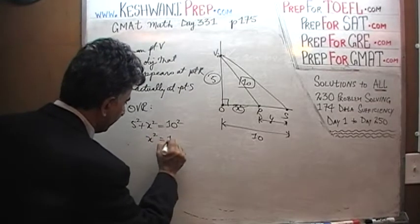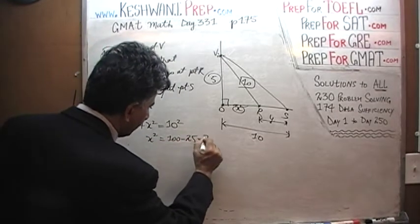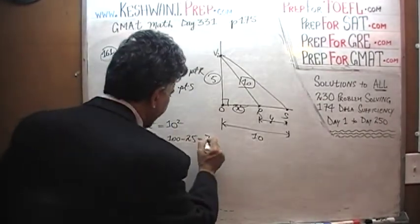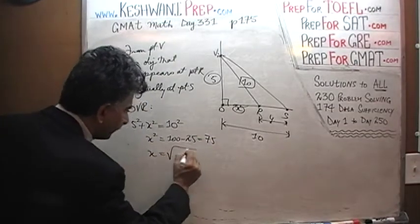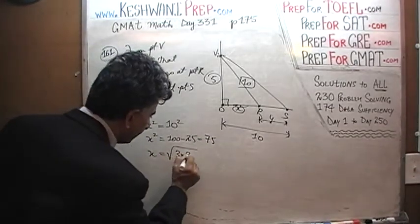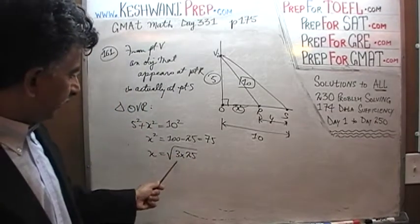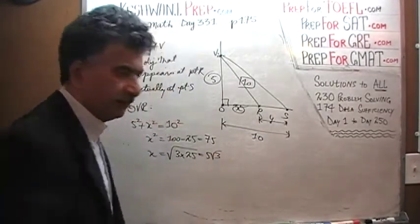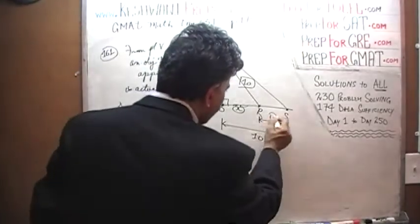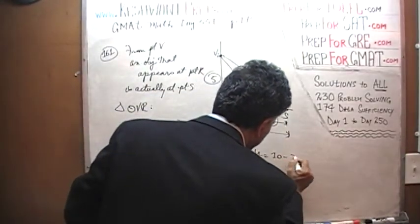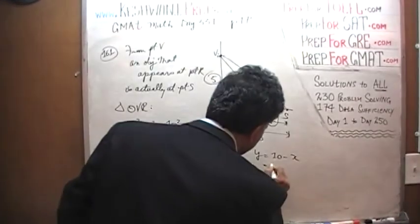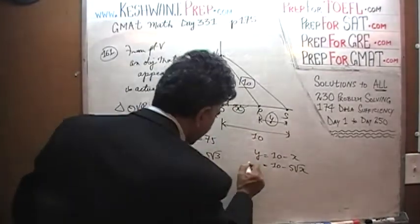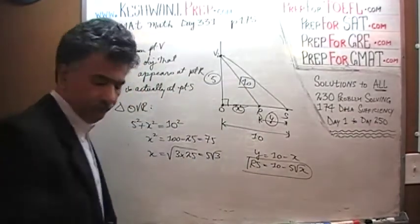Therefore, X squared equals 100 minus 25, which is 75. X is the square root of 75, which can be written as 3 times 25. The square root of 25 is 5, so it comes outside and we end up with 5√3. Therefore, Y equals 10 minus X, which is simply 10 minus 5√3. That's the distance R to S — we are done.